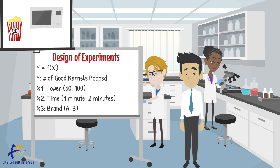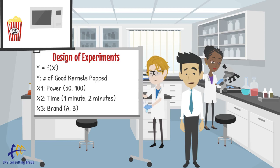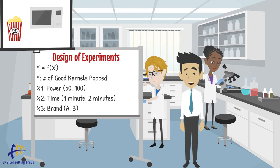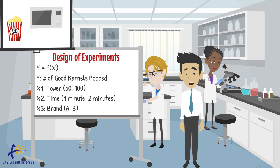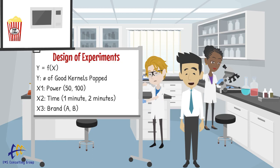We can run what's called a two-level full factorial design of experiment, or DOE, where we determine the best settings for power, time, and brand to maximize good kernels popped. We might set power at a low of 50 and a high of 100, time at one minute low and two minutes on the high side, and brand A versus B. We run the experiment, determine the optimal settings, and those settings would then be validated through additional popcorn popping and then made a standard.